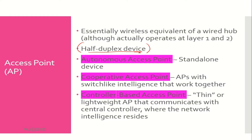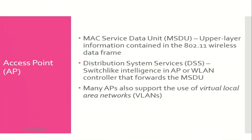There are three types of access point. First, autonomous access point: acts as a standalone device. Second, cooperative access point: APs with switch-like intelligence that work together. Third, controller-based access point: also known as a thin or lightweight AP, that communicates with a central controller where the network intelligence resides. MAC service data unit (MSDU) is upper-layer information contained in the 802.11 wireless data frame. Distribution system services (DSS) is switch-like intelligence in an AP or WLAN controller that forwards the MSDU. Many APs also support the use of virtual local area networks, or VLANs.